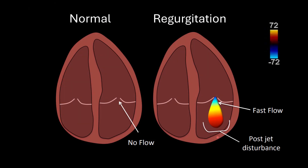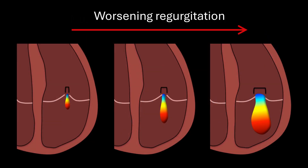Here's the appearance of regurgitation on ultrasound with color Doppler. Regurgitant jets will be fast and turbulent blood flow, so the regurgitant jet will appear bright and behind the valve. As the severity of the regurgitation worsens, the regurgitant jet fills more of the affected chamber, and the narrowest portion of the jet — called the vena contracta — gets wider. As a good rule of thumb, if the regurgitant jet looks like a small lighter flame, it's not hemodynamically important. If it looks like a flamethrower filling greater than 50% of the chamber with a wide vena contracta, it is likely hemodynamically significant.